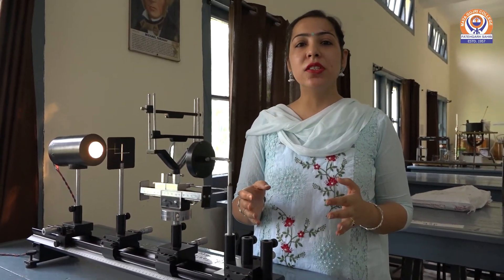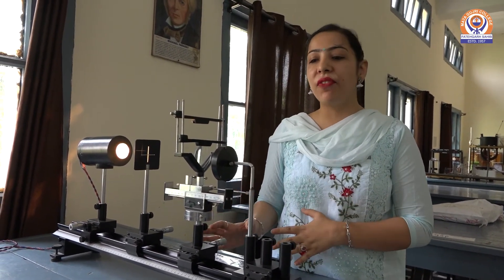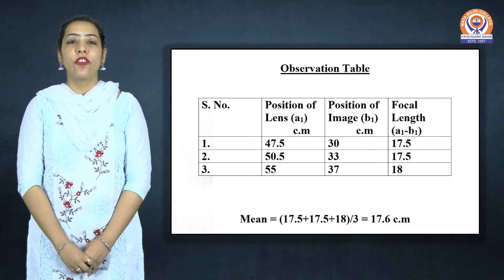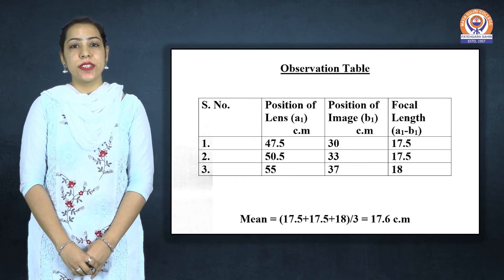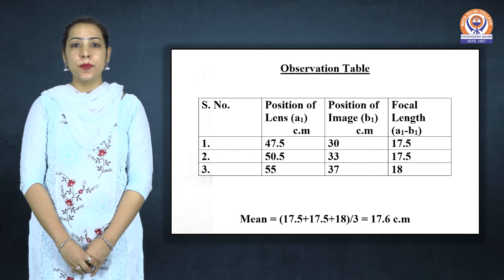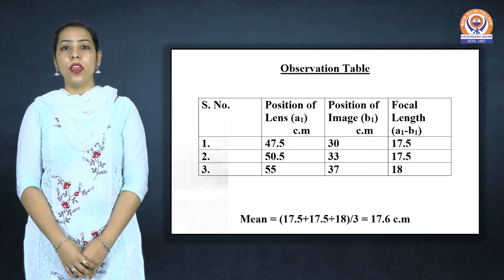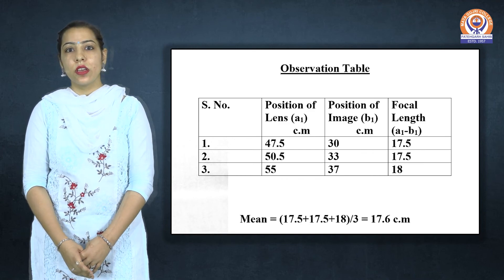When we compare the readings of the roughly calculated focal length and the experimentally calculated focal length, we see that both readings are approximately close to each other. From the experiment, we calculated that the focal length of the convex lens is 17.6 centimeters, and the roughly calculated focal length was 19 centimeters. This means they are approximately the same. This is the way we can easily calculate the focal length of a convex lens or concave lens. Thanks for watching.